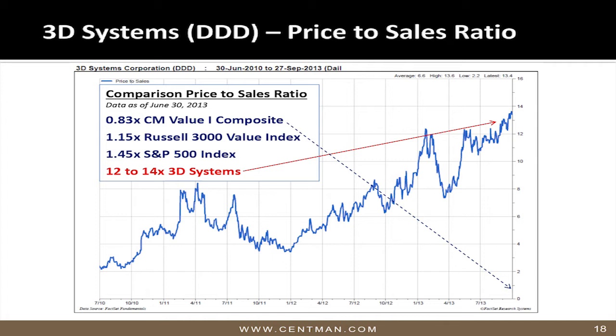Let's use a very common metric: price-to-sales. Century Management's portfolio — every stock in your portfolio combined — is selling at 0.83 times sales, less than one-time sales. The Russell 3000 sells at about 1.15 times sales. The S&P 500 sells at 1.45 times sales. 3D Systems is selling at 11 times sales. So this company is very highly priced relative to any other measure you want to use. Why? Because of the growth potential — people are looking at the growth and saying 'wow,' but that stock is already probably discounting five or ten years of growth.